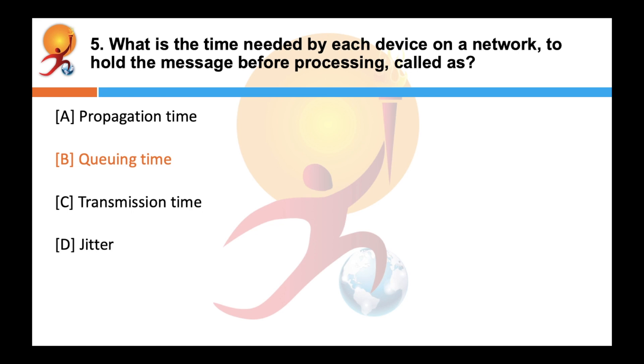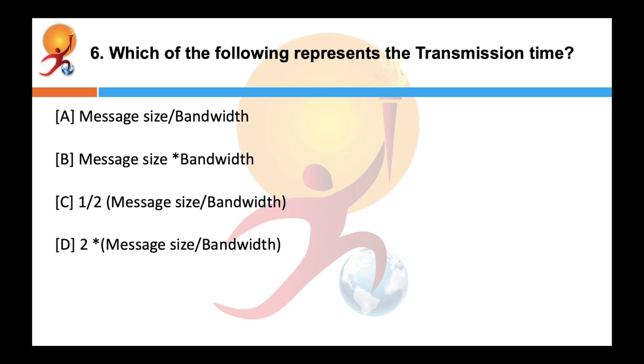Queuing time is not constant as it changes with the load imposed on the network and the amount of data coming in and going out. Which of the following represents the transmission time? The correct answer is message size upon bandwidth.